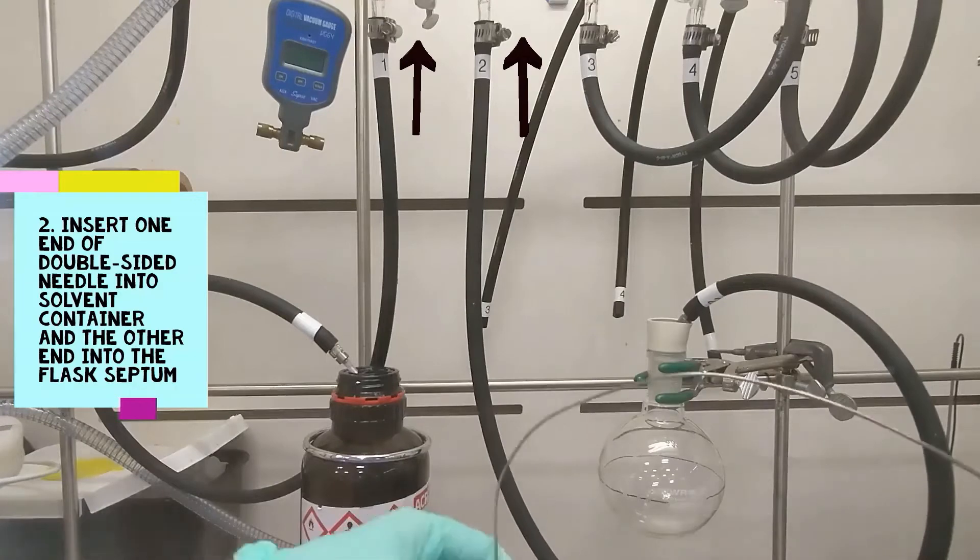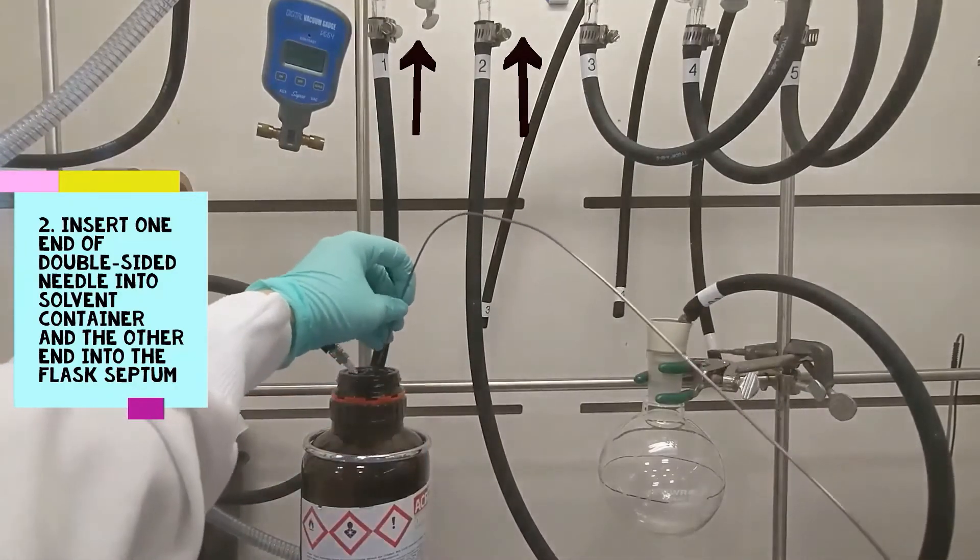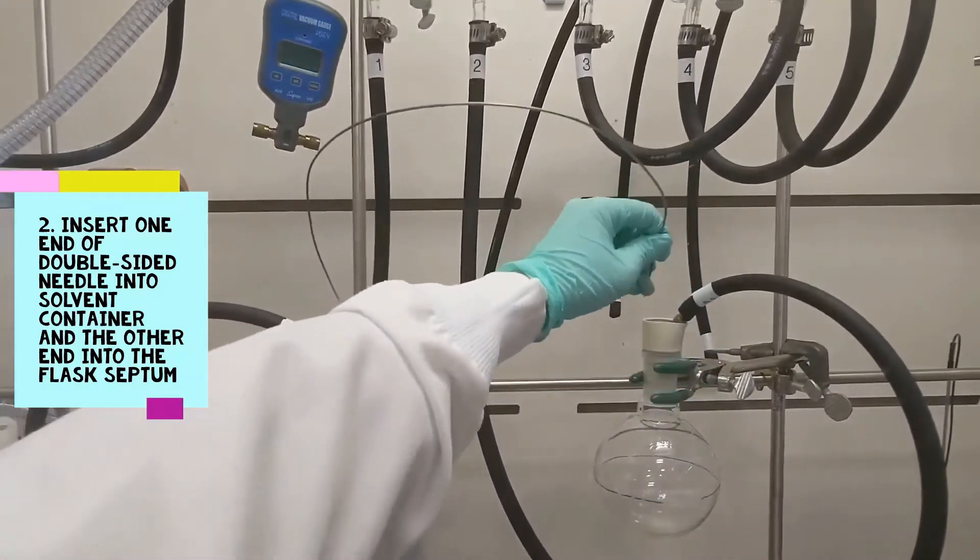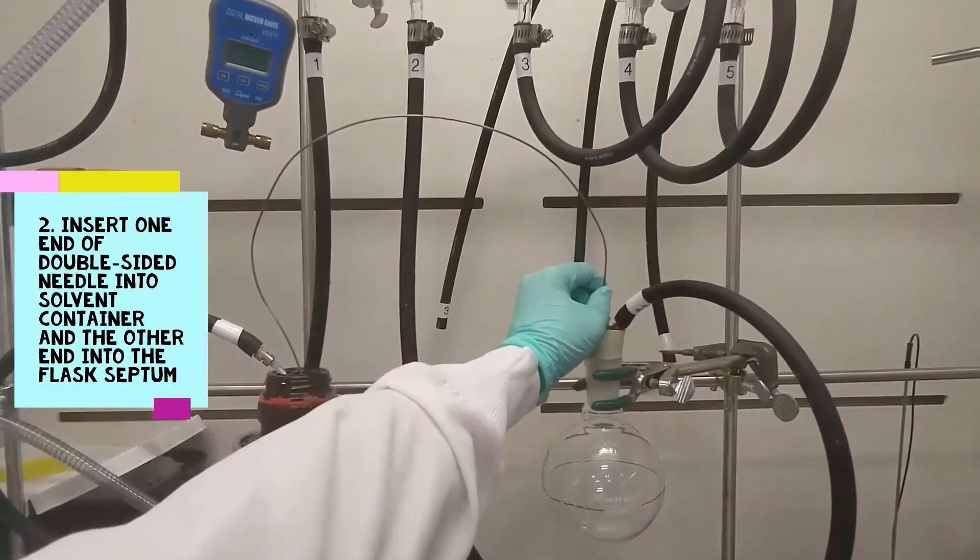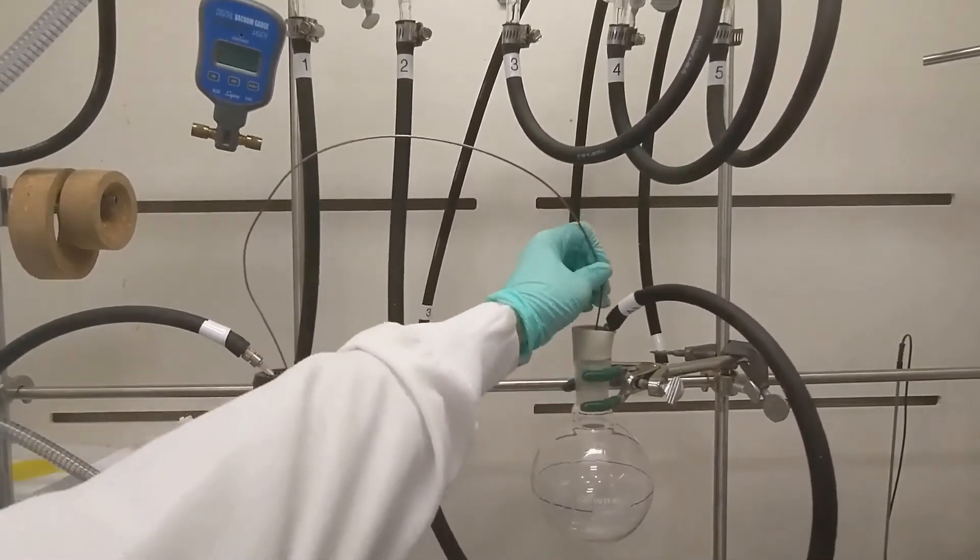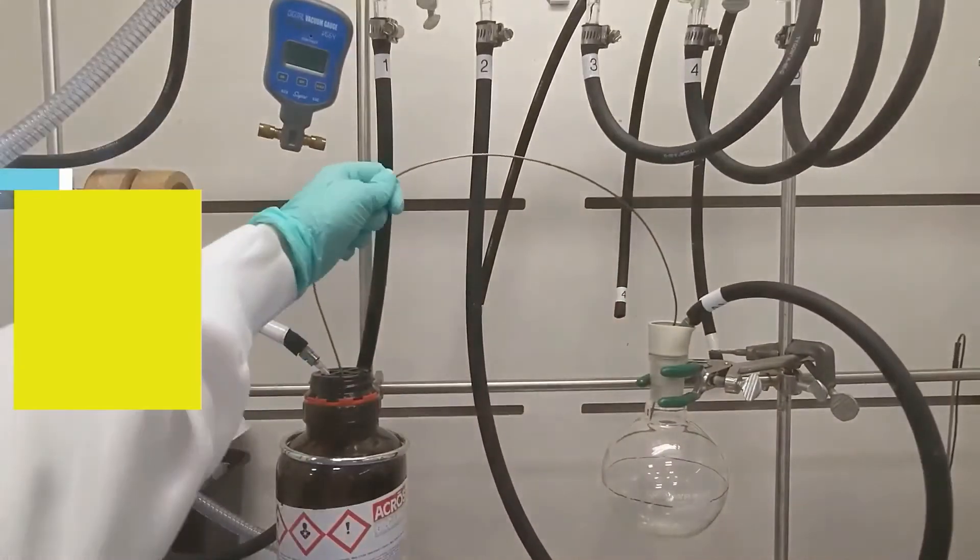Here, roughly 200 milliliters of solvent is being transferred. The black line on the round bottom marks where the 200 milliliter volume line is on the flask. In my reaction preparation, I usually measure out 200 mils, or however much volume I wish to transfer.